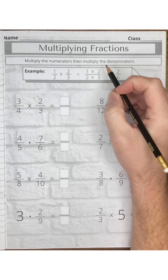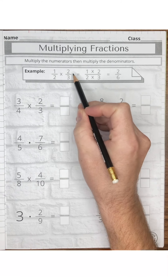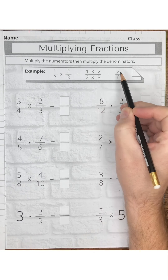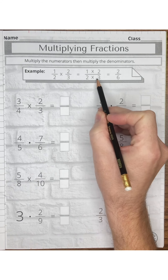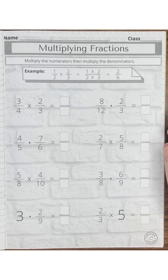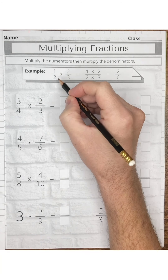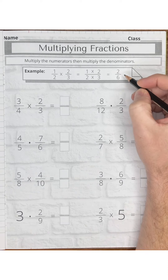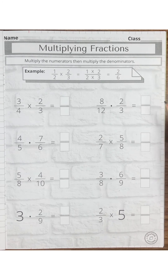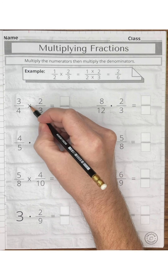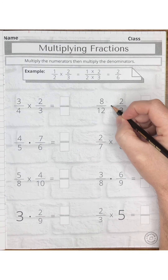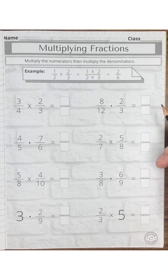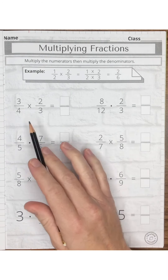Example 1: one-half times two-thirds. When you multiply the numerators, 1 times 2 you get 2. When you multiply the denominators, 2 times 3 equals 6. So one-half times two-thirds is two-sixths. In this worksheet you will see the standard X for the multiplication symbol, and also a dot — the operation can be expressed with both symbols.